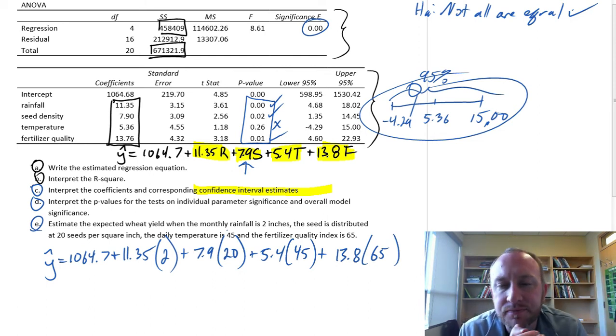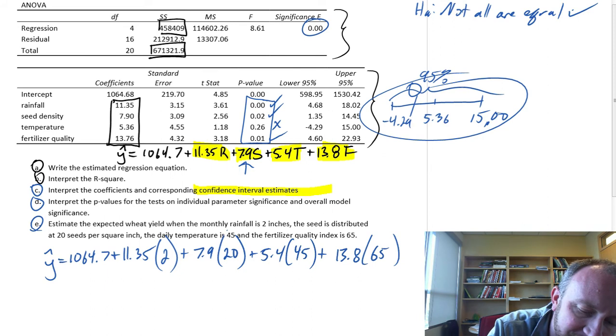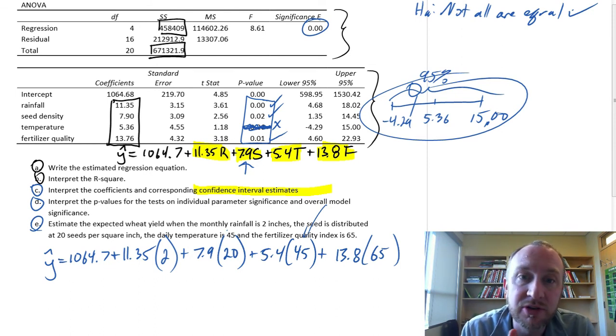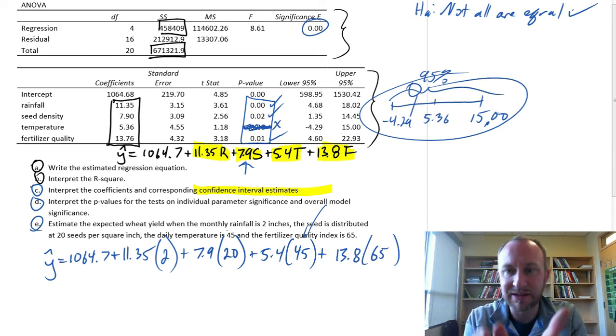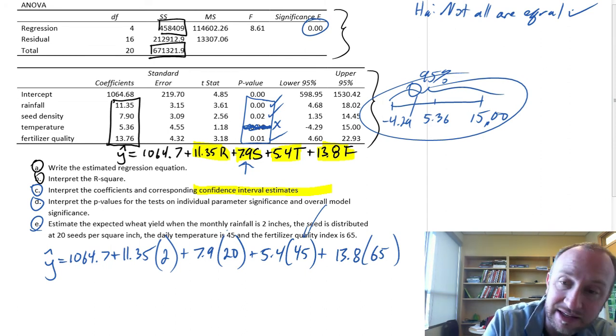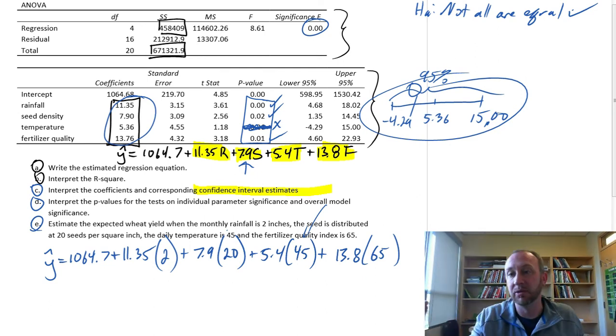It's often the case that when students see a problem like this and they're given all of this data, having just gone through all the hypothesis testing and discovering that temperature was not statistically significant. That doesn't mean don't include it. When you're asked to then go forth and use the estimated regression equation for estimation purposes. Normally, what we would do upon seeing that temperature is not statistically significant.